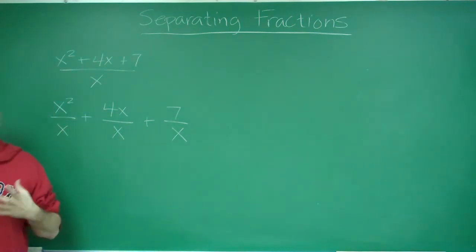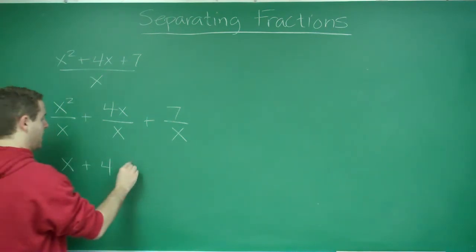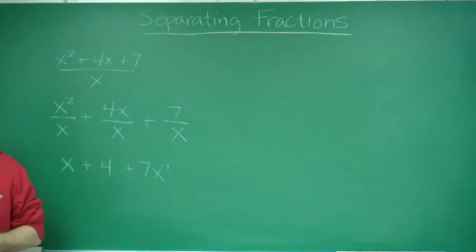But now each one of these can be simplified a little bit. x squared divided by x is just x. 4x over x is 4. And 7 over x, we can write as 7x to the negative 1.